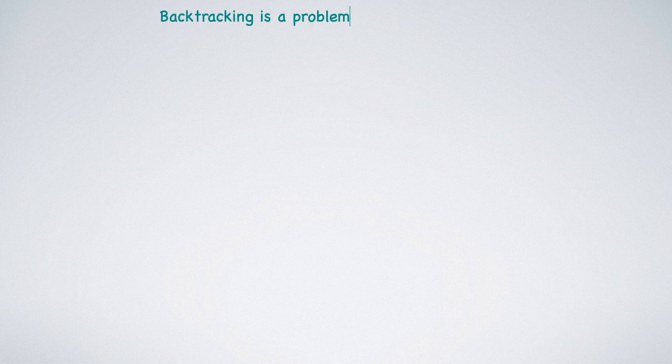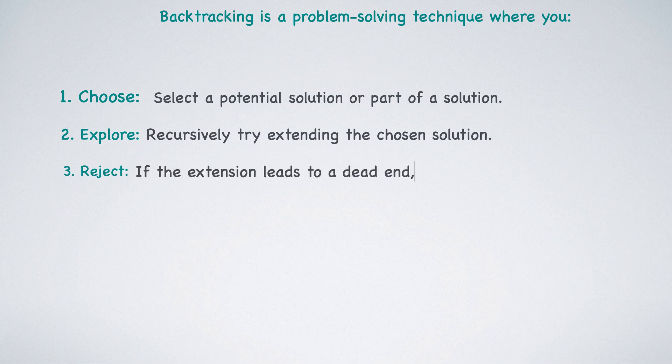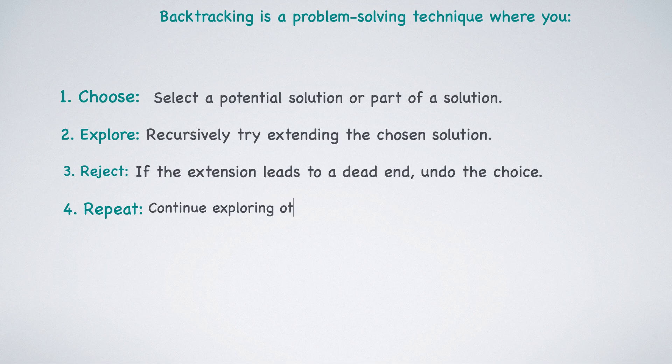Backtracking is a problem-solving technique where you first choose, select a potential solution or part of a solution. Explore, recursively try extending the chosen solution. Reject, if the extension leads to a dead end, undo the choice. Repeat, continue exploring other choices until a solution is found or all possibilities are exhausted.